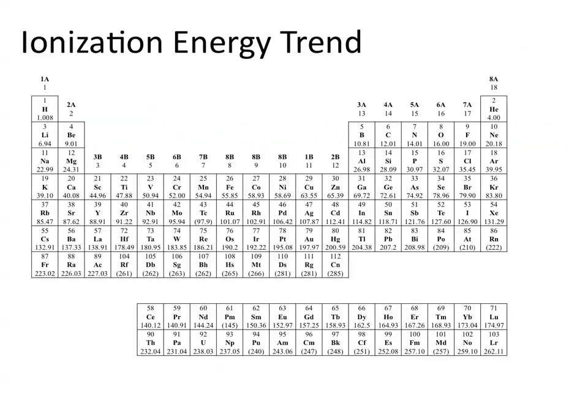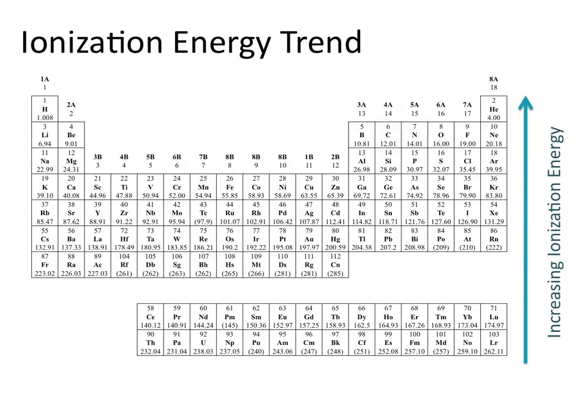Let's look at the periodic table trend for ionization energy. Ionization energies increase as you go from the bottom to the top of the periodic table. When removing an electron, you're removing it from the outermost shell. As you go down the periodic table, the size of the atoms becomes bigger, and the electrons reside in shells farther and farther away from the nucleus. The farther away an electron is from the nucleus, the easier it is to remove that electron.